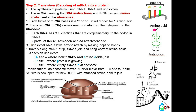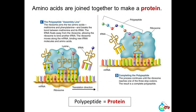Three sites on the ribosome: A site — where new tRNAs and amino acids join; P site — where the protein is growing; E site — where empty tRNAs exit the ribosome. Translocation: as the ribosome moves, tRNAs move from the A site to the P site; the A site is now open for a new tRNA with an attached amino acid to join. Amino acids are joined together to make a protein.